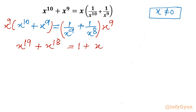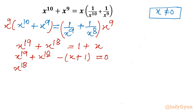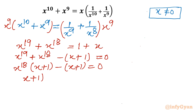Taking all terms to one side: x^19 + x^18 - x + 1 = 0. I take x^18 common from the first two terms to get x^18(x + 1), and the remaining terms give -(x - 1) = -(x + 1)... then taking (x + 1) overall common gives (x + 1)(x^18 - 1) = 0.